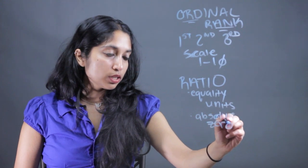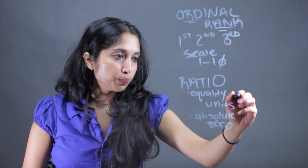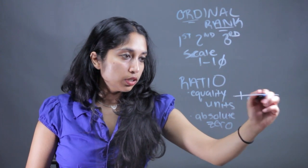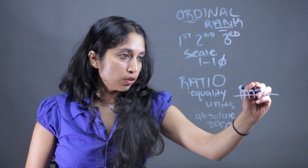So what equality of units means is that all the units are the same. So for example, on a ruler, that's something that has an equality of units because these guys are all going to be the same.